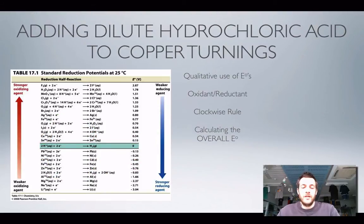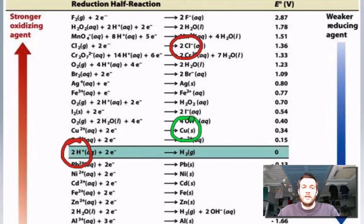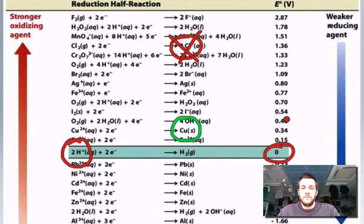Adding dilute hydrochloric acid to copper turnings. We've got H⁺ ions and chloride ions in the hydrochloric acid, and copper metal. Copper metal simply can't react with chloride ions because they'd both have to lose electrons. Hydrogen has a more negative electrode potential than copper, so this equilibrium lies further to the left and this one further to the right — they're already in those positions. So this reaction is not going to happen.